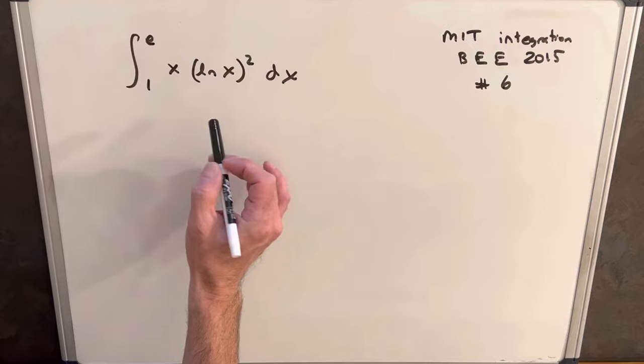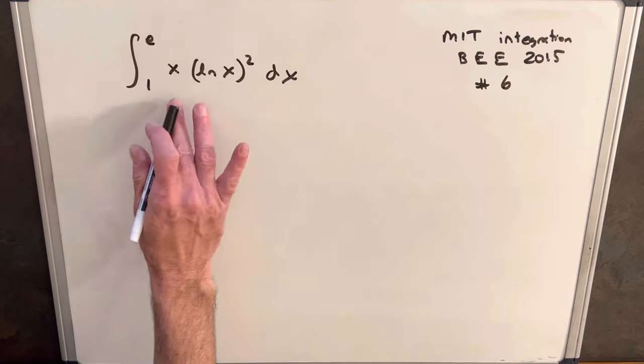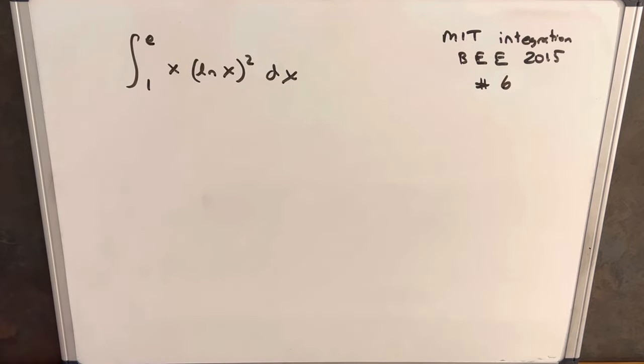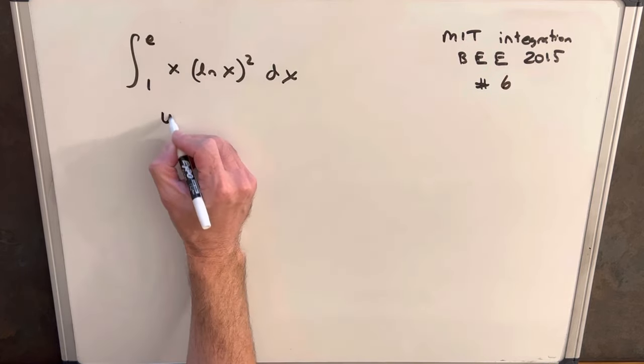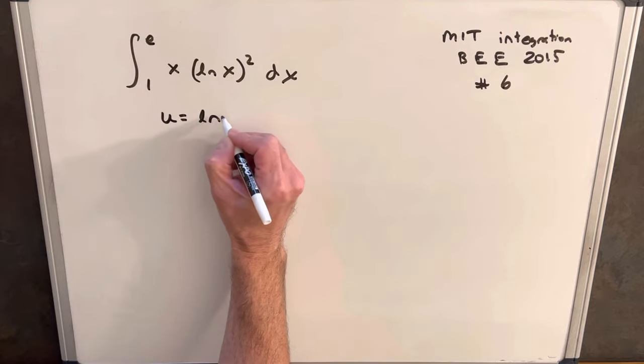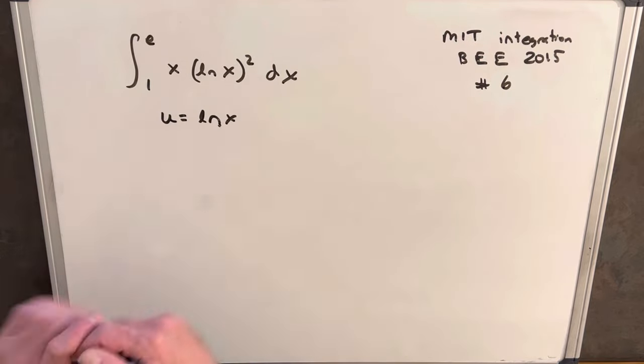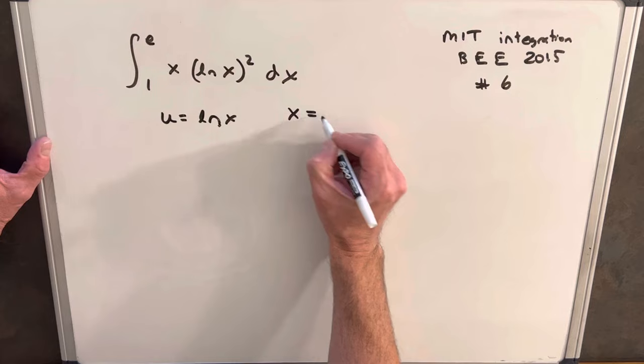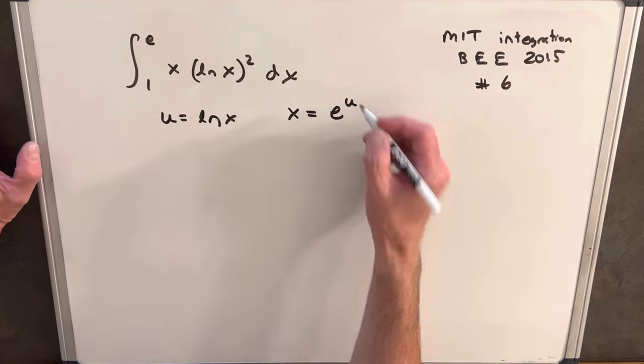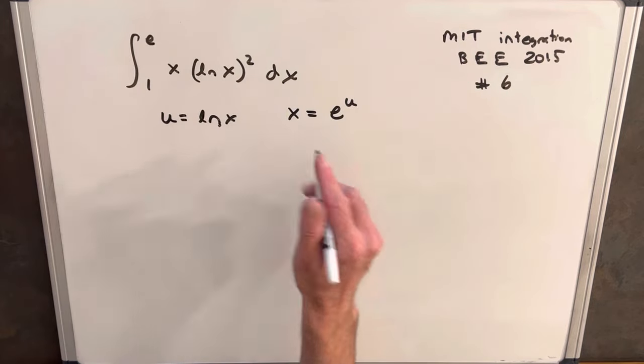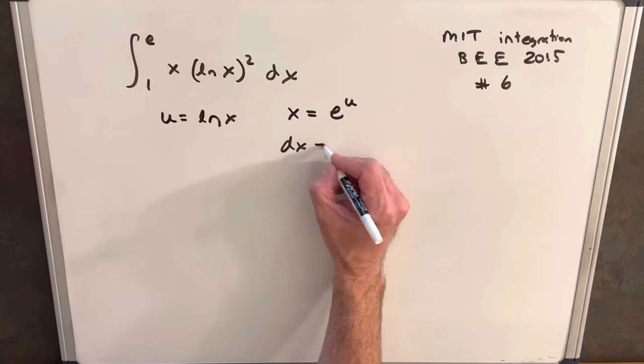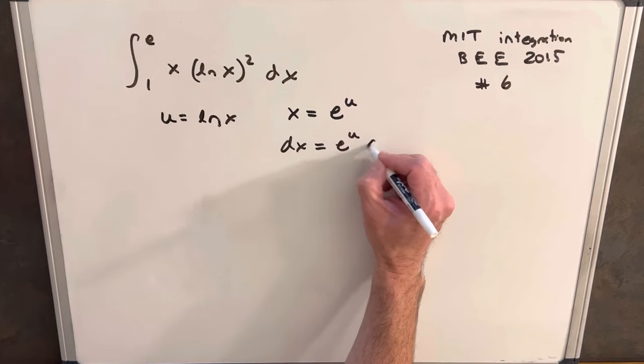First, I had a little concern that if we try to do a u substitution for ln x, we don't have an x in the denominator. But then I thought, let's just try this and see how it works out. So we'll set our u equal to ln x. Then using the definition of the log, we can rewrite this as x equals e to the u. Then we can take our derivative of x and we'll have dx equals e to the u du.